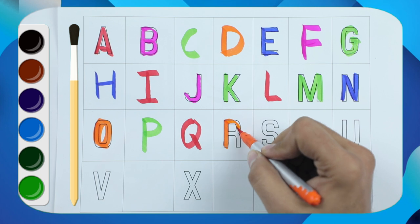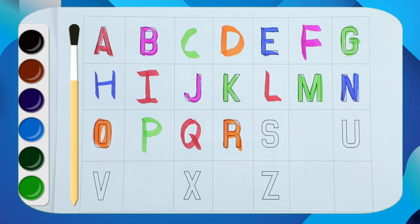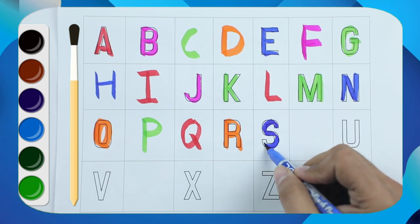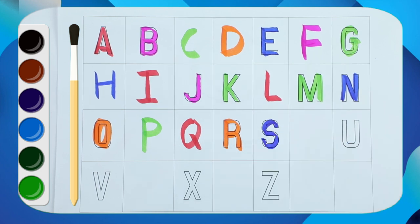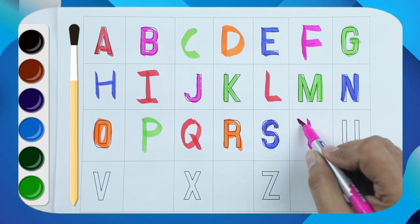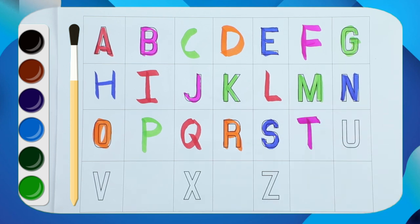What next? Yes, it's S, S for sheep. Blue color S. What next? Tell me. Yes, it's T, T for tiger.